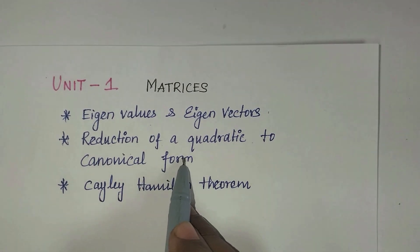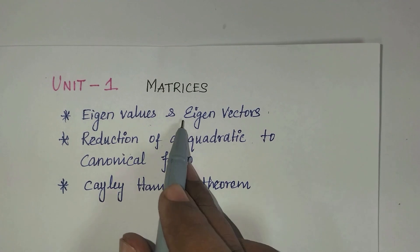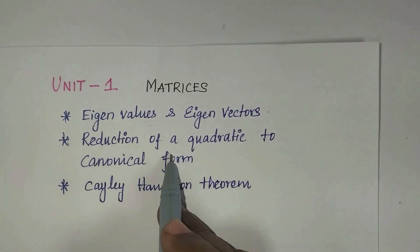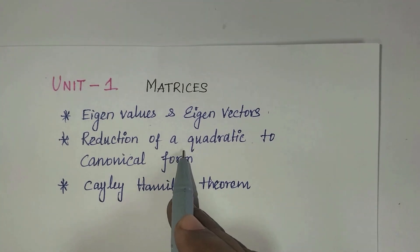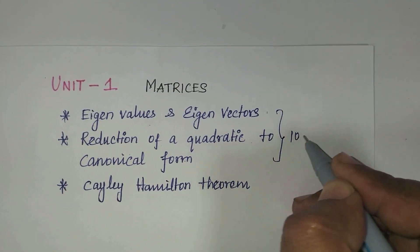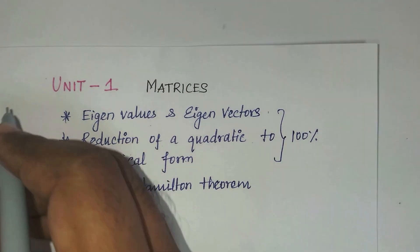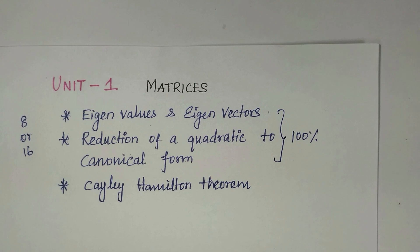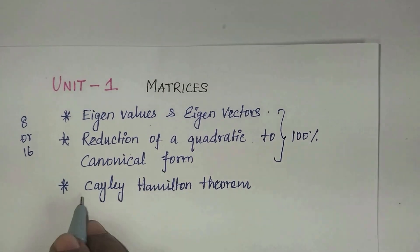Based on the reduction of a quadratic form to canonical form, in this section definitely you will get one 16-mark question. You can practice more on this. If you don't know how to find eigenvectors, how to write quadratic equations, or convert to canonical form, then based on this, 100% you will get one question, either 8 marks or 16 marks.